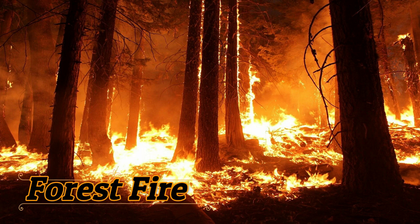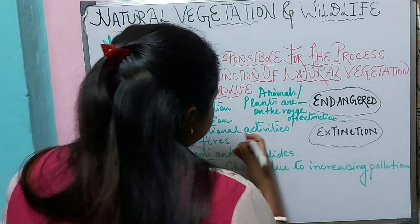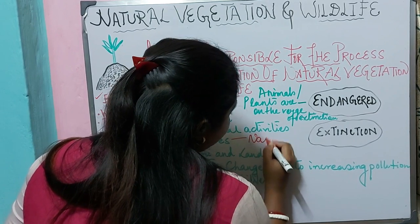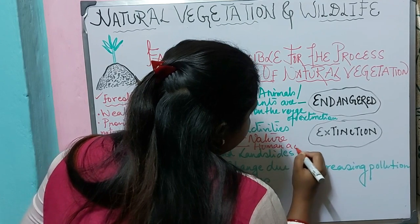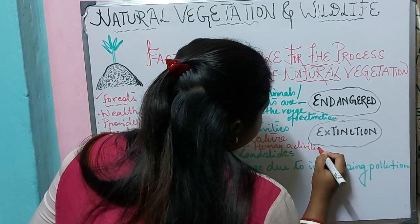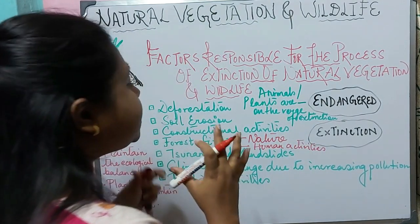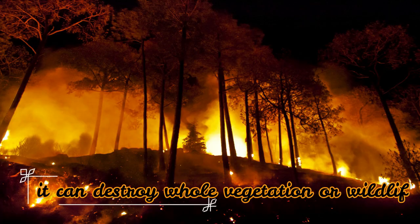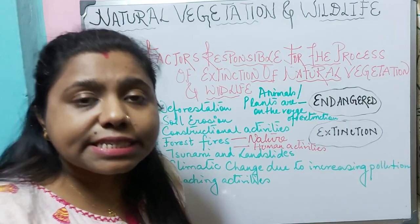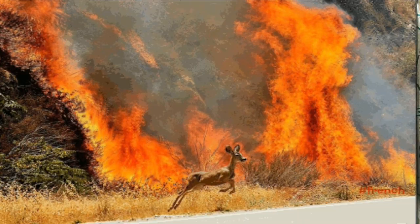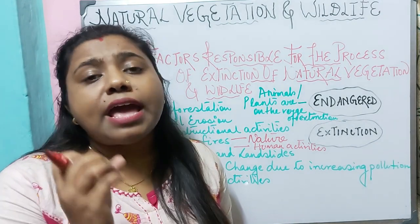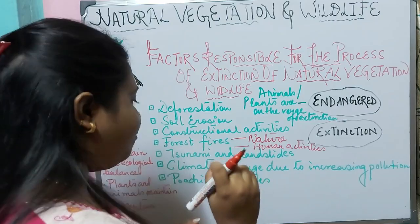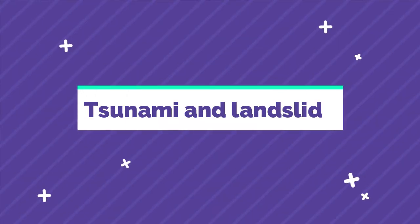The next factor responsible for extinction of natural vegetation and wildlife is forest fire. Forest fires are a product of both natural causes and human activities. A forest fire is an uncontrollable fire which can cause huge destruction of wildlife and vegetation. Recently, devastating forest fires in the Amazon and Australia caused enormous loss of vegetation and wildlife.